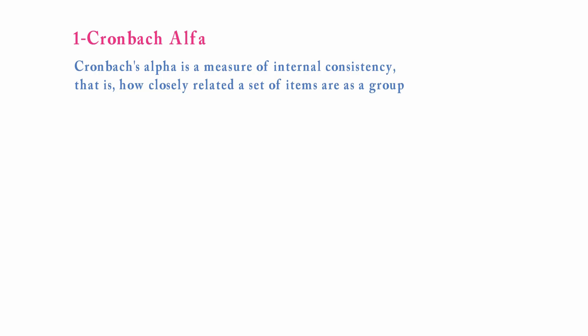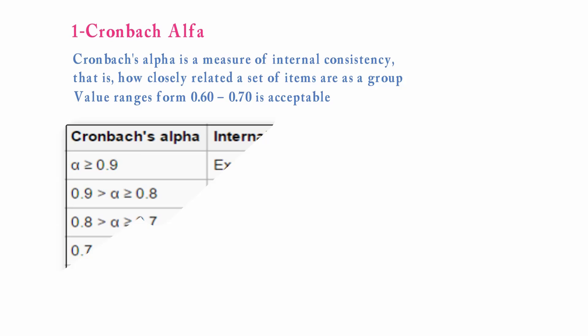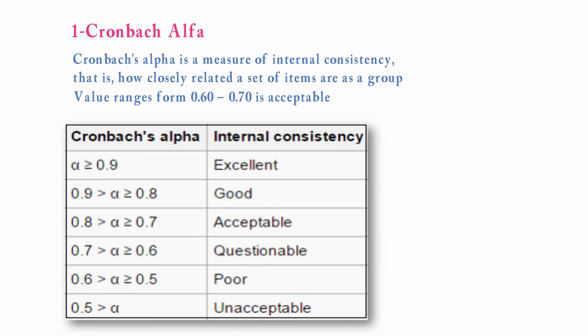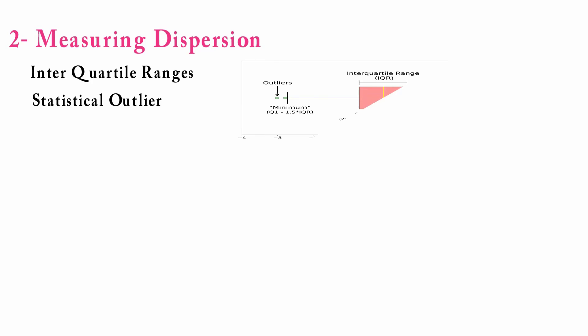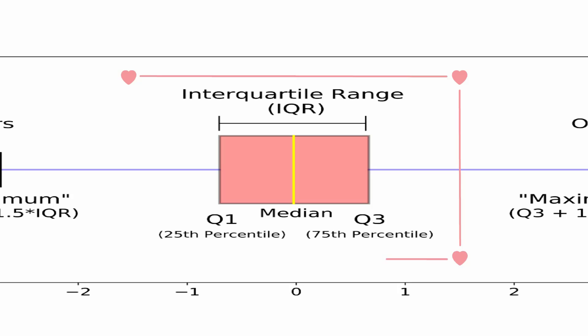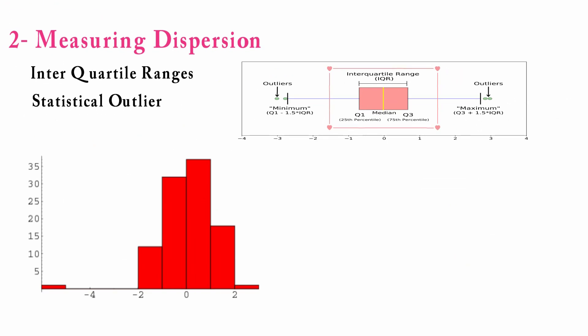Cronbach's alpha is a measure of internal consistency — how closely related a set of items are as a group. Values range from 0.60 to 0.70 as acceptable; if the values are less than or equal to 0.9 the results are excellent, and if the values are less than or equal to 0.5 the results are unacceptable. Measuring dispersion means checking statistical outliers — an outlier is a data point that differs significantly from other observations, and you can identify them visually by chart.